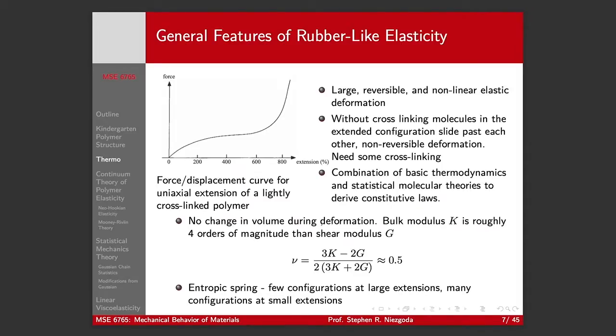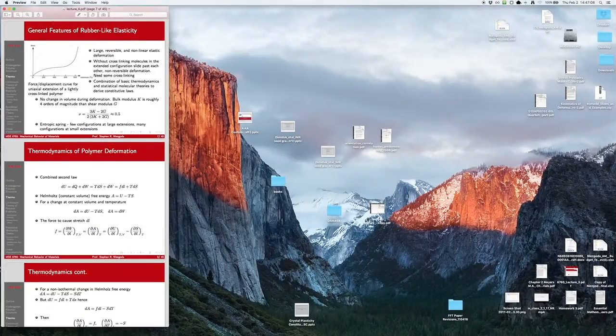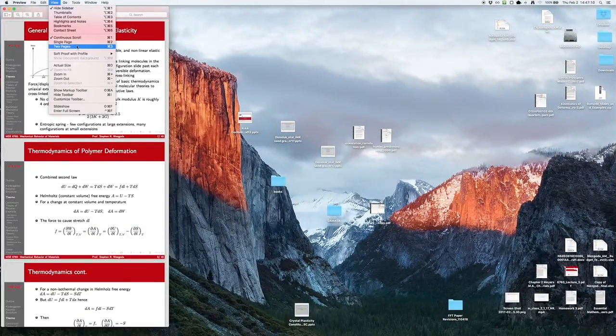Important thing is we have roughly no change of volume for rubber elasticity. So our bulk modulus is several orders of magnitude larger than the shear modulus.